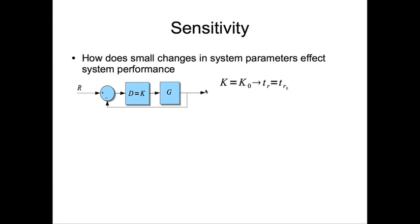So let's say you found a particular k, k0, that satisfies your design requirements, which is rise time being less than or equal to tr0. Now, over time, let's say the controller degrades like everything else that degrades over time and your k0 changes to k0 plus or minus delta k.